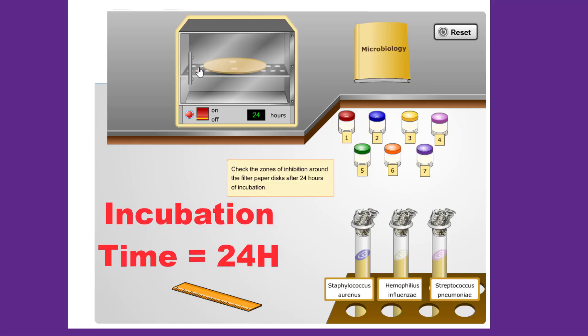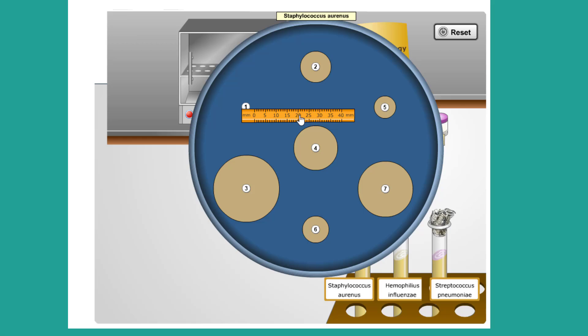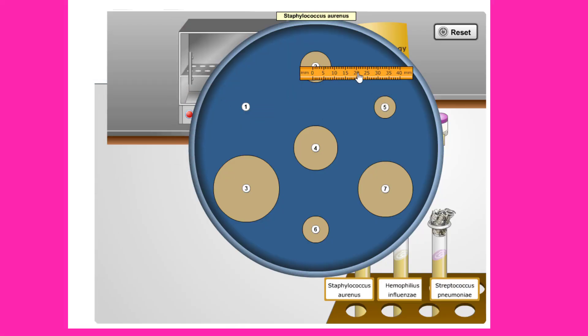We will incubate for 24 hours. We can click again to remove the petri dish from the incubator. Next, we will examine the patterns of bacterial growth. The colored area that covers most of the surface of the petri dish is called the lawn culture of the bacteria. This is the visible layer of thousands of bacterial cells that are growing together.